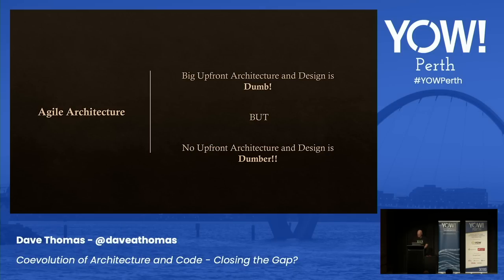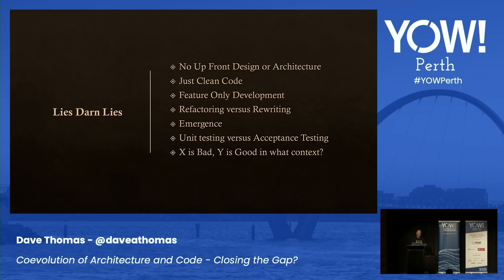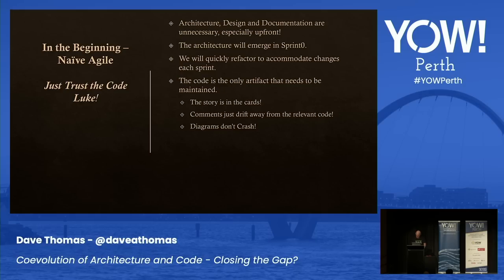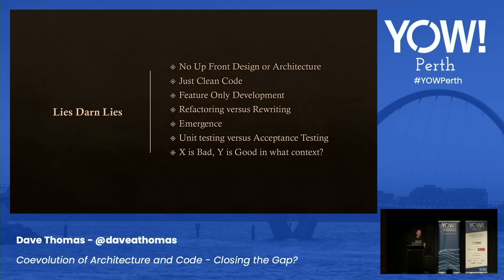In agile architecture, in the early days, the naive Agilistas basically said we don't need any design, documentation, or anything else — everything will be emergent, and that's just emergent bullshit. The lies you hear: no upfront design, no architecture, just clean code; feature-only development, we don't need components; we'll refactor when we're really rewriting; we'll have emergent architecture and design. Neil Ford is great, but most people don't have his architectural experience and can't realize what patterns are needed.